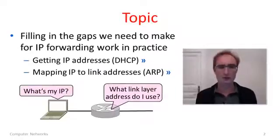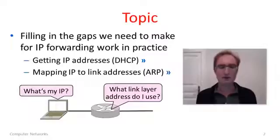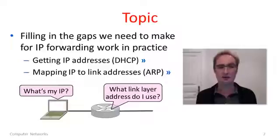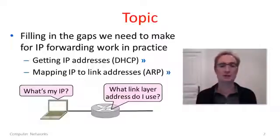Astute viewers might have realized there are a few gaps in my explanation of IP forwarding. We need a little bit of extra functionality, in particular to answer a couple of questions. First, nodes need to be able to get an IP address to use as a source or destination — we'll look at how DHCP does this. Next, to send a packet across a link we need to fill in both IP addresses and link layer addresses, which raises the problem of mapping from a destination IP address to its link layer address. A protocol called ARP takes care of this.